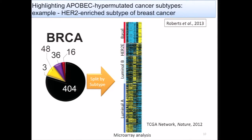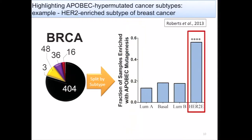Another published result: when we looked at subtypes of breast cancer from the TCGA marker paper — subtypes based on expression — and split the APOBEC signature by subtype, because we can identify each sample enriched with APOBEC mutagenesis, we see that the HER2-enriched subtype has a higher presence of APOBEC-mutated samples.